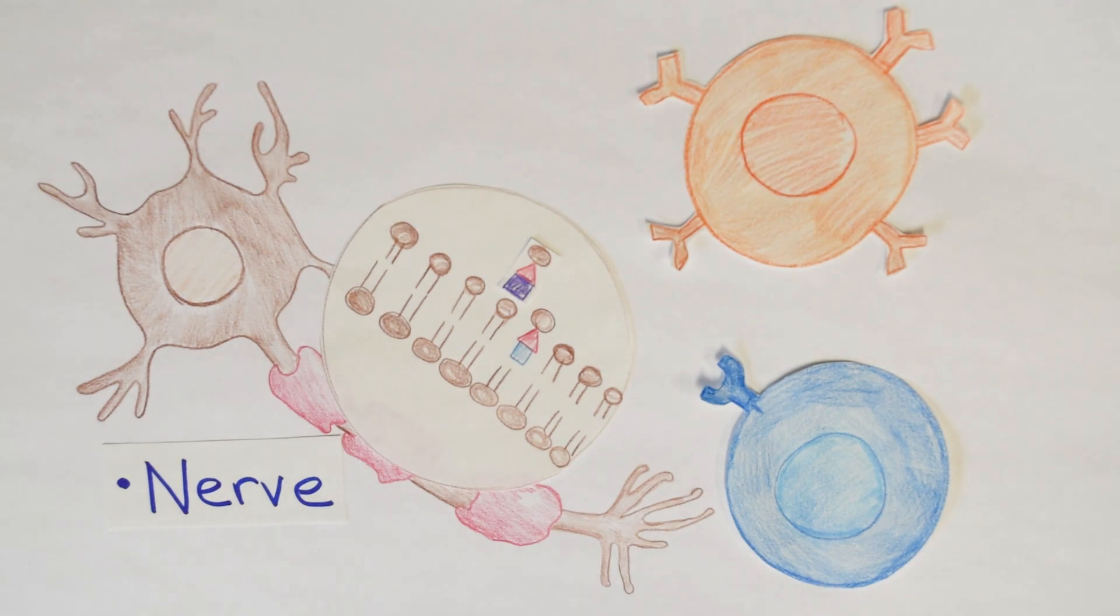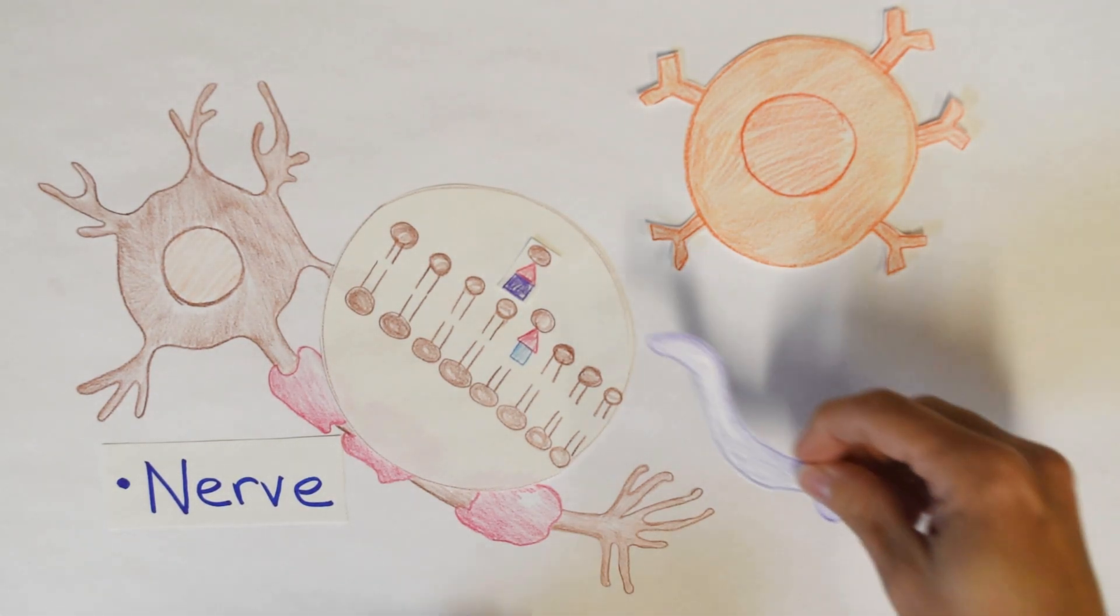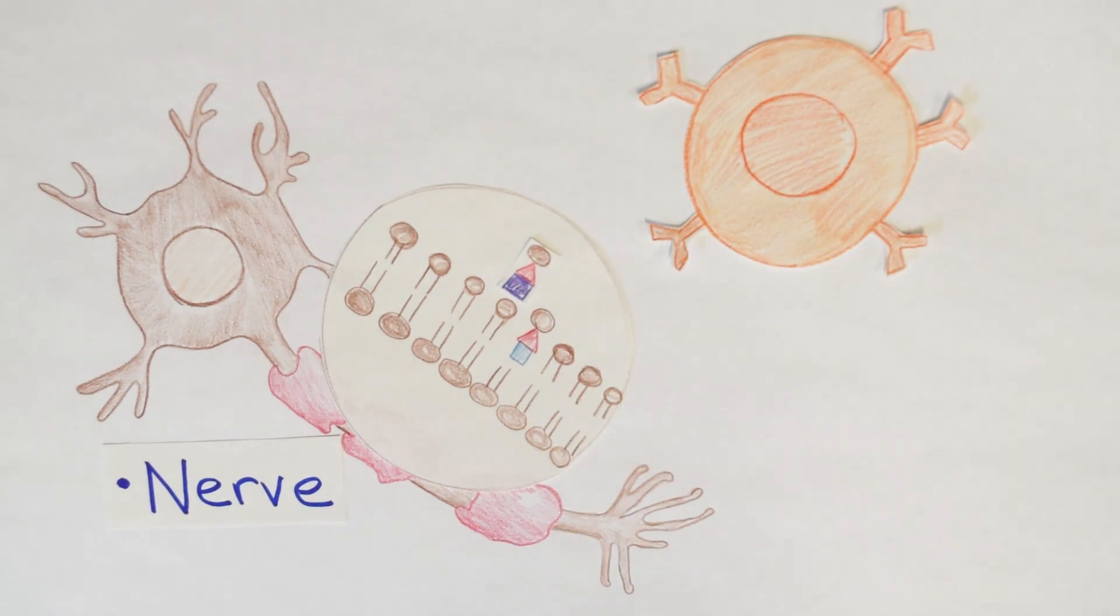Guess what? It's really, really similar to Campylobacter jejuni. It's so similar that the immune system can't tell them apart. Yeah. So that's actually called molecular mimicry.